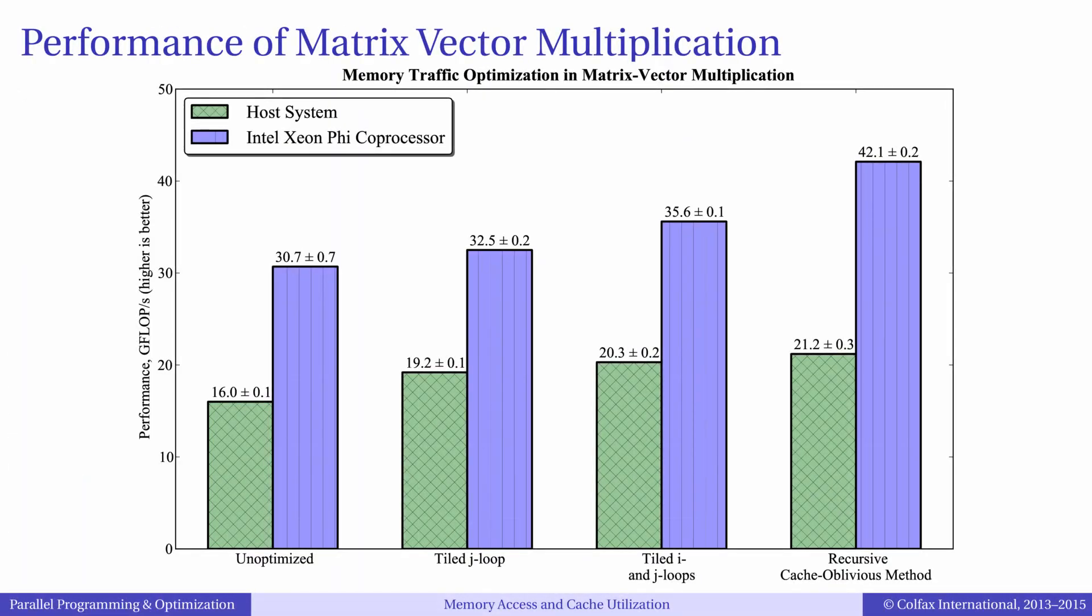Performance results show that the cache oblivious algorithm improves the matrix vector multiplication rate compared to the best-tiled algorithm that works for both platforms. You can also verify that it is less sensitive to the values of tuning parameters, so it is more portable across different architectures.